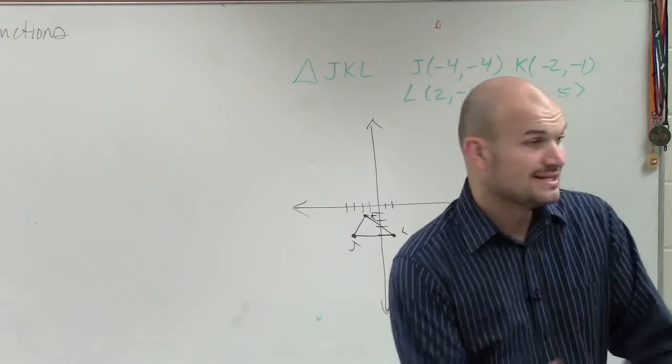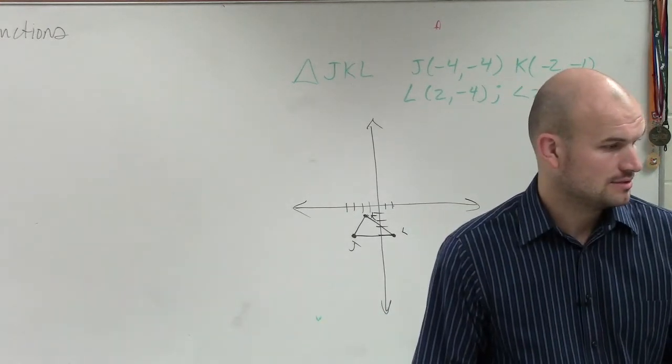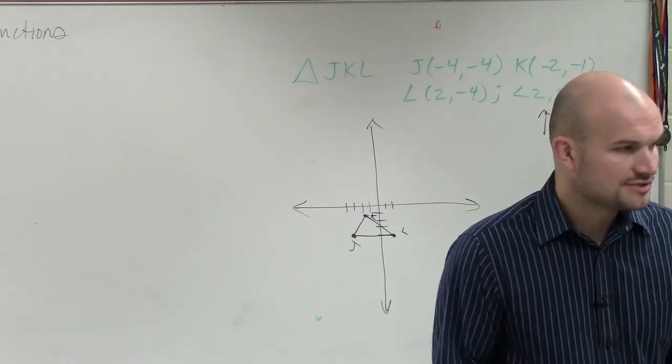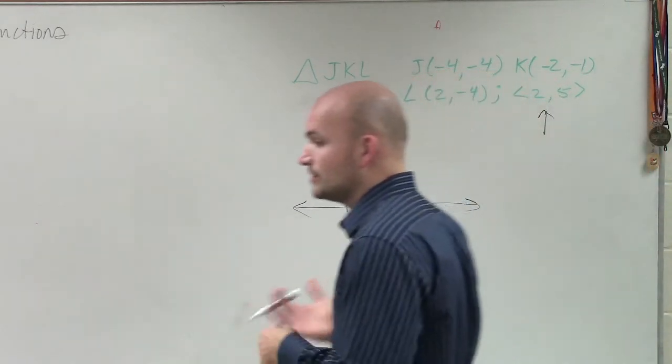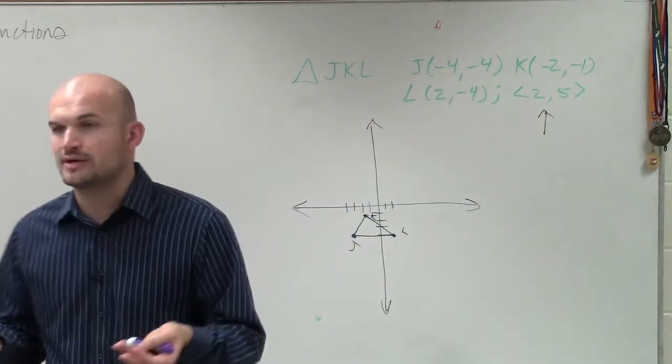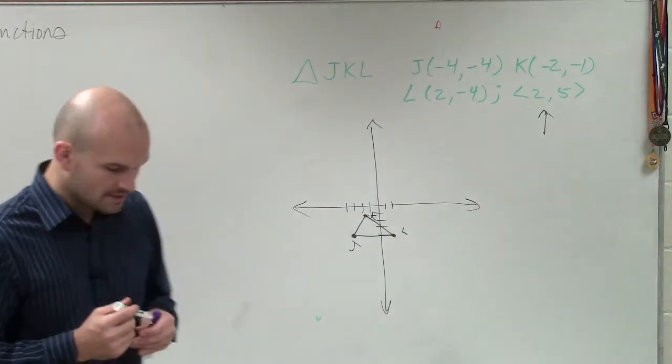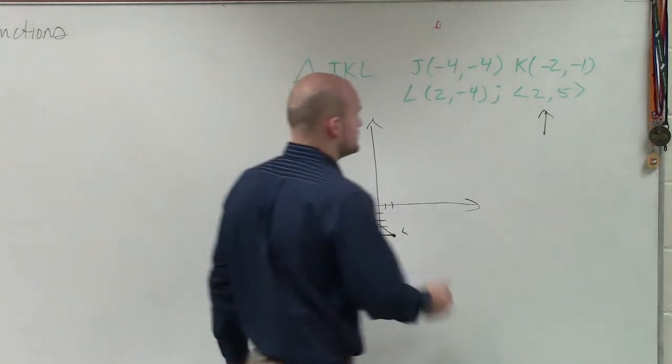Now, whatever we do to this, remember the new coordinates or the new label of the points are going to be what we call the prime points. So we need to look at our transformation vector. And remember, we can identify this transformation vector by these pointed parentheses.